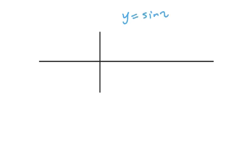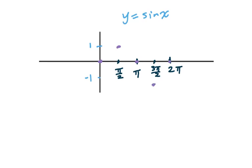Let's talk about that again. For y equals sine x, the period is two pi, so we label two pi, then pi, half again we get pi over two, this half we get three pi over two. Then we got one and negative one. The pattern will be zero zero, then going up because pi over two is one, then going down like a wave. So we sketch the graph like this.